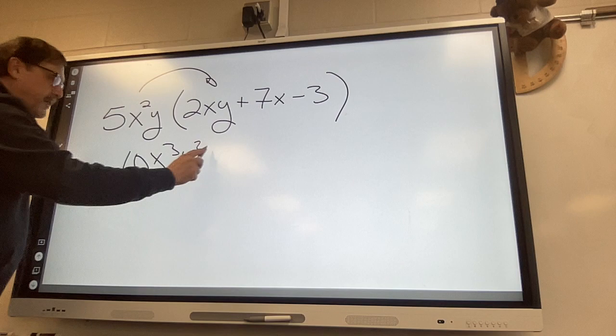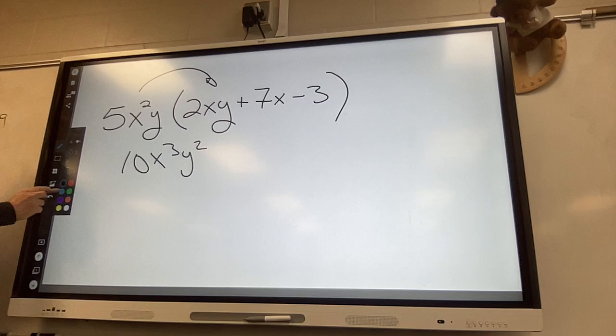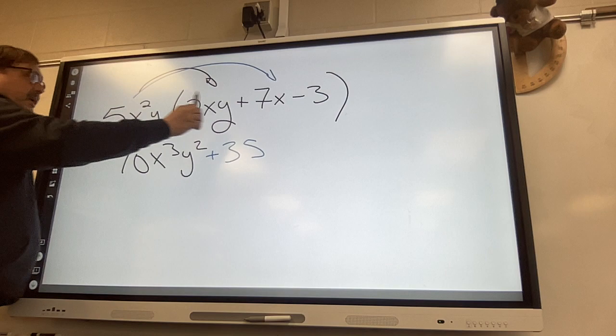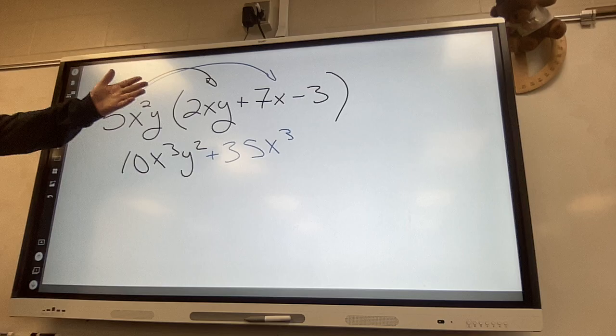All right this arrow does not need to be drawn but you take the first one and you take it times the outside. Regular five times regular seven is regular 35. Five x squared times x is x to the third using exponent rules and the y there's no multiplication so the y just comes along for fun and just stays right along there.